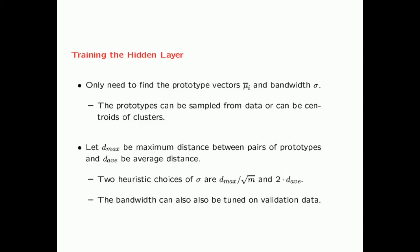For training the hidden layer, the prototypes can be sampled from the data or can be centroids of clusters found via k-means clustering. For choosing the bandwidth, there are several heuristics: if D_max is the maximum distance between pairs of prototypes, you can set sigma to D_max divided by the square root of M, where M is the number of hidden units. Or you can use twice the average distance between prototype pairs. Alternatively, you can tune the bandwidth using validation data, which introduces a mild level of supervision for one hidden layer parameter.